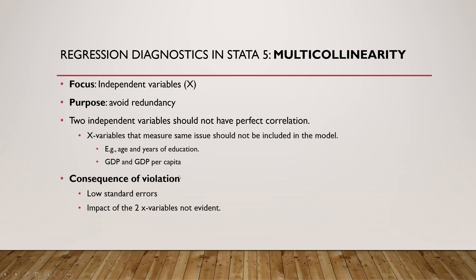The consequences of violating this assumption is that we will run into the problem of underestimated standard errors. That will lead to lower p-values, making results appear significant when they may not be. The other problem is that the impact of the two independent variables that are very much related is not well seen — you don't see that clearly when we include both of them.